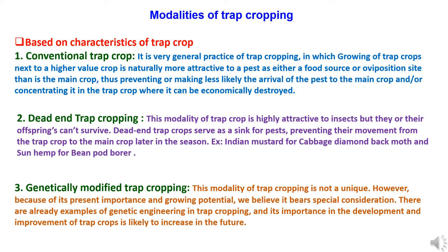Now to study the modalities of trap cropping, based on various parameters. First, based on characteristics of the trap crop — trap cropping is divided into three categories. The first is conventional trap cropping, a very general practice in which trap crops are grown next to a higher value crop and are naturally more attractive to a pest as either a food source or oviposition site than the main crop.